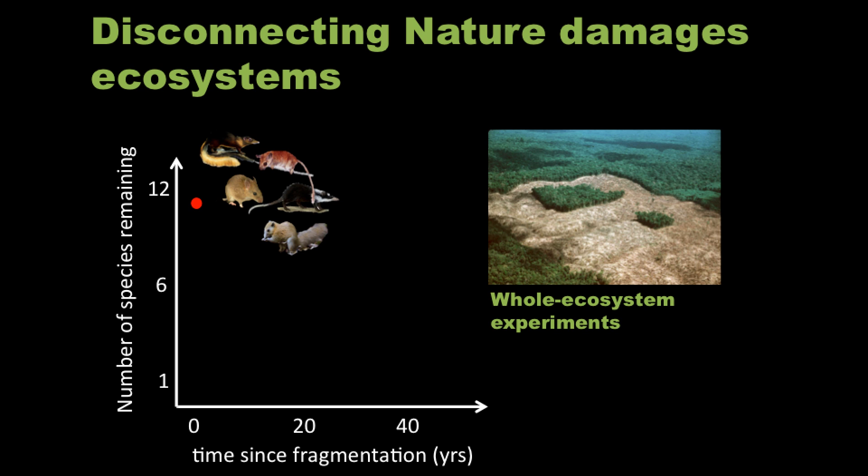What you see here is a typical pattern of what happens as we lose species through time after we isolate a fragment. It happens over decades, and often we lose maybe half — as much as 90% — of the species that are inhabiting those forest fragments. And this is happening globally.